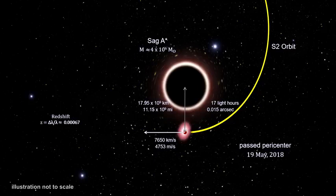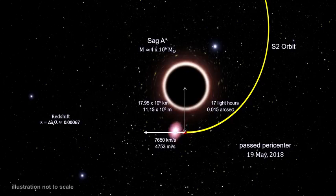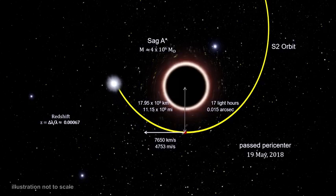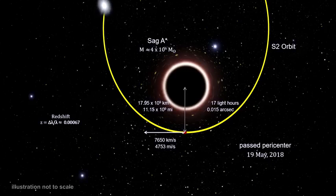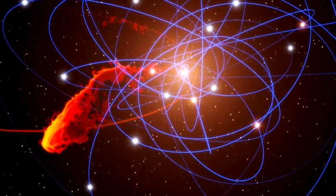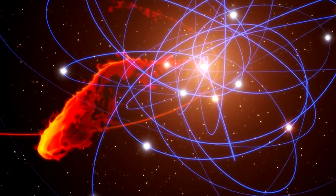S2 was also reddening in color as the black hole's gravitational field stretched its light to longer wavelengths. The color change in this illustration is exaggerated for effect; the actual reddening is quite small and would not be visible to the naked eye. S2's velocity changes close to the black hole were in excellent agreement with the predictions of general relativity. In addition, the change in the light wavelength agreed precisely with what Einstein's theory predicted.